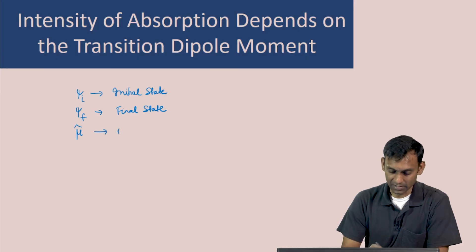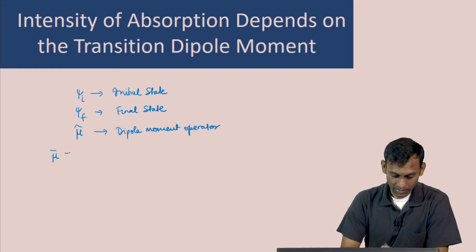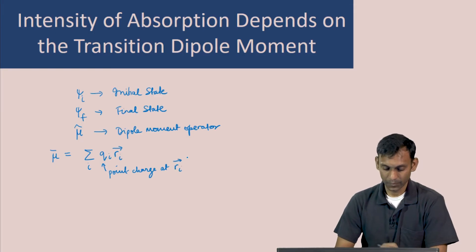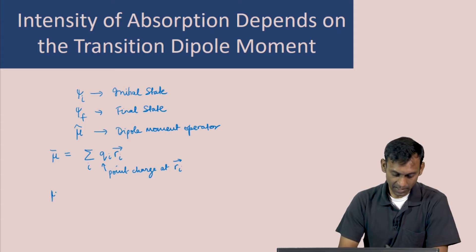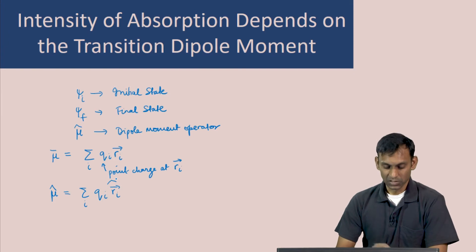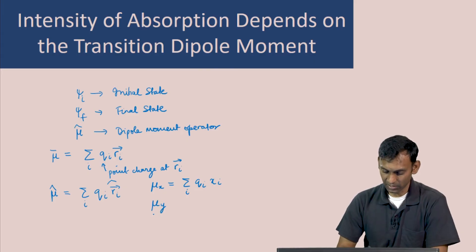To define the dipole moment operator, we start with the dipole moment property, which is the vector quantity μ = Σ_i q_i r_i, where q_i is the point charge at position r_i. Using this property, we can define the dipole moment operator μ̂ as the corresponding position vector replaced by the position operator. This dipole moment operator has three components; the x-component would be Σ q_i x_i, and similarly you can write the expressions for the y and z components.